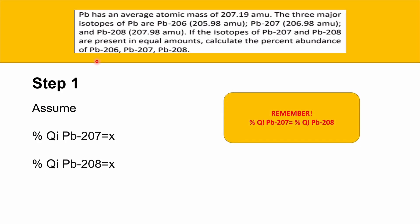Why? Because remember that the information from the question tells us the isotopic abundance for Plumbum-207 equals the isotopic abundance for Plumbum-208. So we can use the same variable because they have the same value.